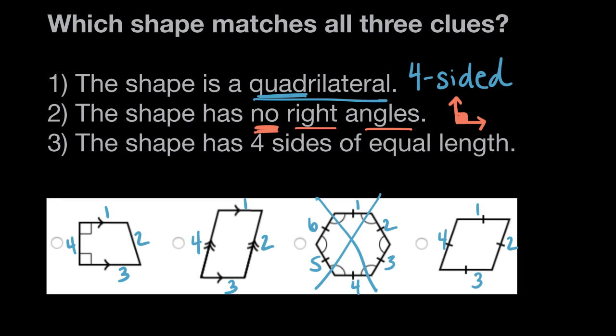Looking now down at our shapes, we can see right away that shape one has two right angles. There's a square corner and another square corner, so this has right angles, but the shape we're looking for has no right angles, so we can rule this shape out.